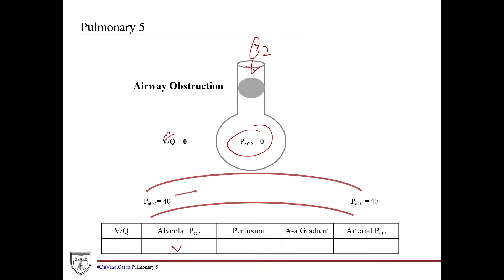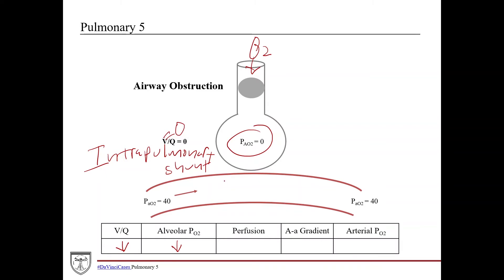What you've created here is an intrapulmonary shunt — an entire lobe not getting any oxygen or air. Shunts are either intrapulmonary or cardiac. Cardiac shunts occur in patients with holes in the chambers such as ventricular septal defects or atrial septal defects, where blood moves from the right to left side of the heart without going to the lungs for oxygenation. Intrapulmonary means there is a part of the lung not being ventilated while blood still flows past it.